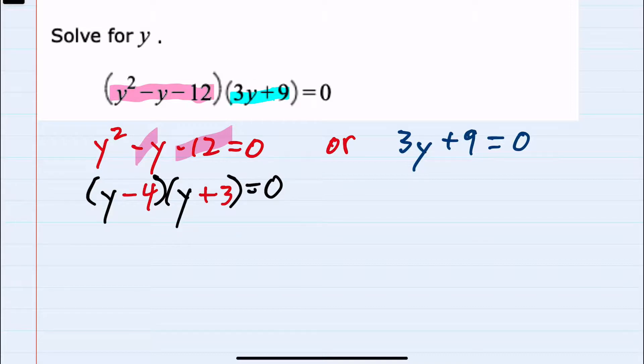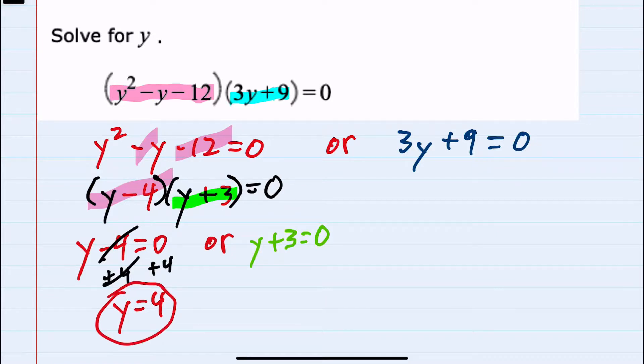and here again we have multiplication equaling zero. So either the first term is zero, y minus four could be zero, or the second one, y plus three could be zero. Solving each of these, adding the four over gives me a y is four solution. For the other one, subtracting the three over gives me a y equals negative three solution.